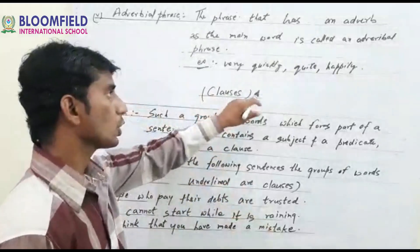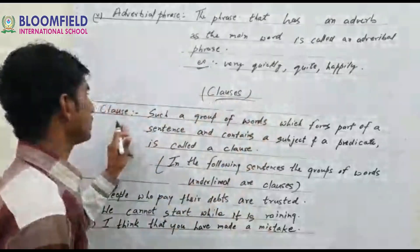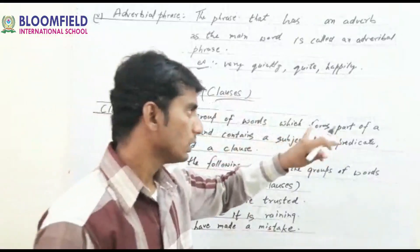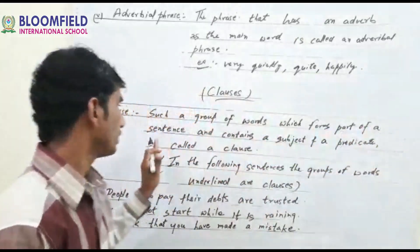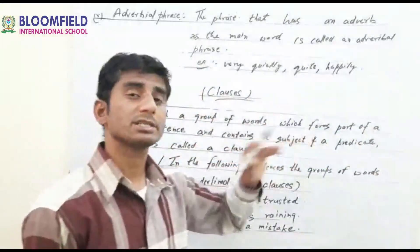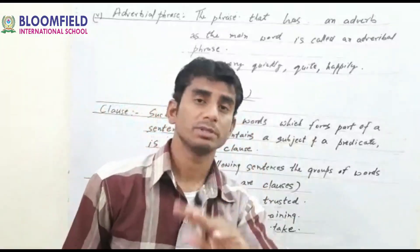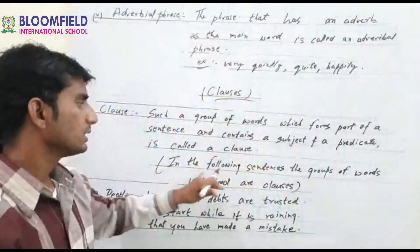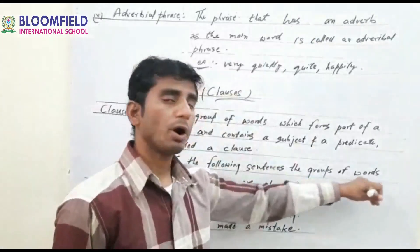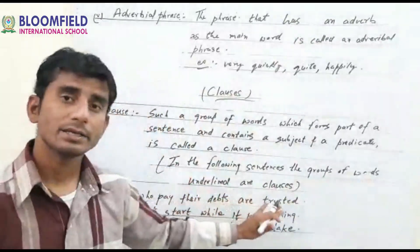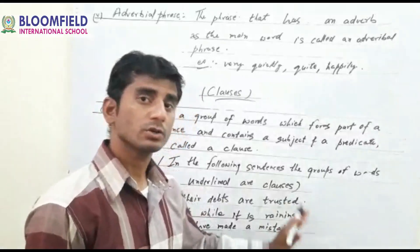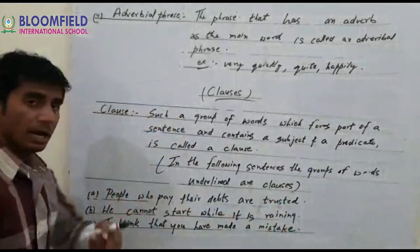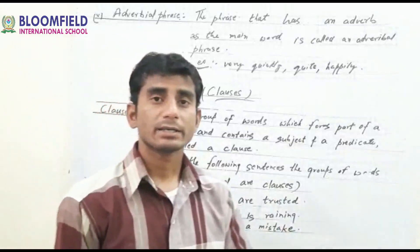Now, clauses. What are clauses? A clause is a group of words which forms part of a sentence and contains a subject and a predicate. The subject and predicate will both be there — that is called a clause. In the following sentences, the underlined group of words are the clauses.